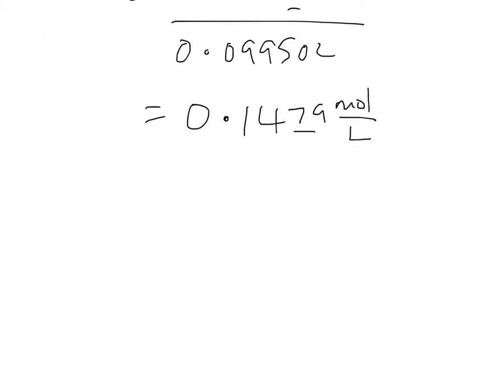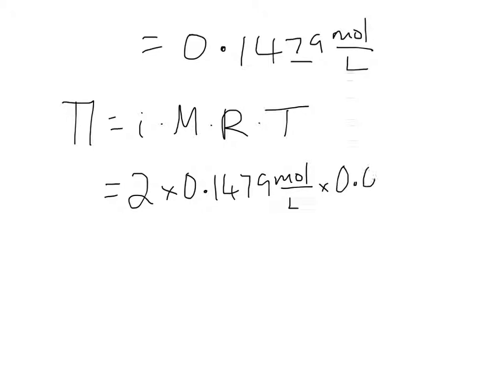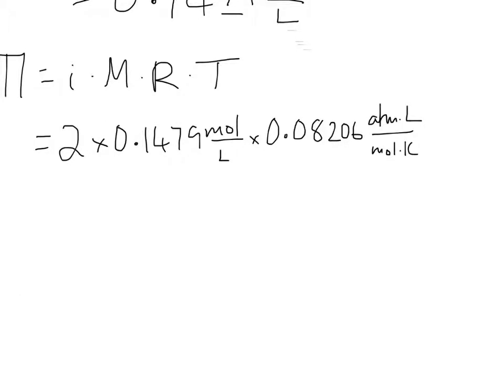And now we're ready to substitute into the osmotic pressure equation. So we know pi is I, van't Hoff factor, M, molar concentration, gas constant temperature. The van't Hoff factor was 2 because it broke down into two things. The molar concentration we have above. And if we write down the moles over liters, we can see it's going to cancel with what comes next. So gas constant, atmosphere, liters per mole, Kelvin. And the very last thing is the temperature. And the temperature was 310 Kelvin.